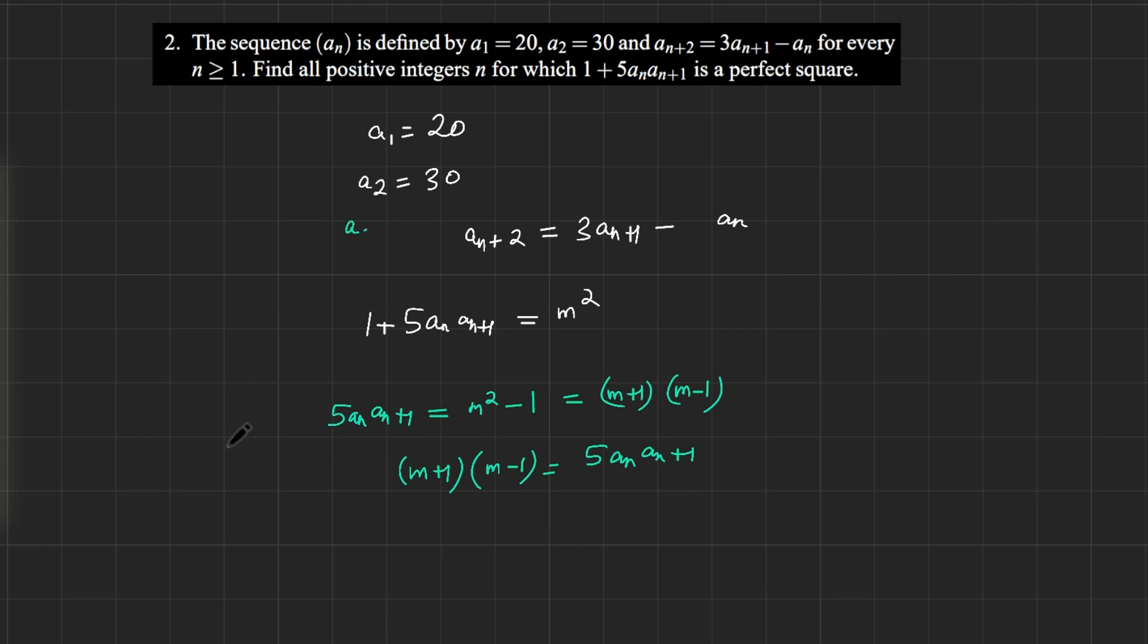So we have a₃, that would be 90 minus 20, that would be 70. Well, one thing to notice is that they're all multiples of 10. And that's pretty easily provable by induction. If aₙ₊₁ is a multiple of 10 and aₙ is a multiple of 10, then obviously aₙ₊₂ is a multiple of 10.